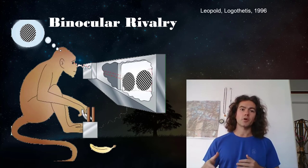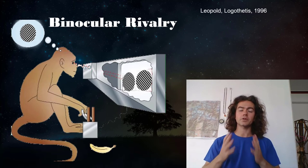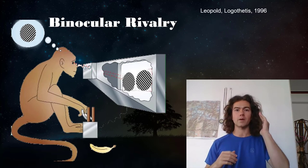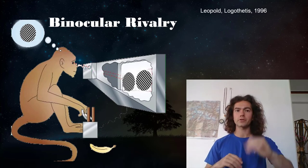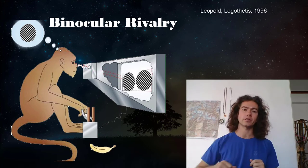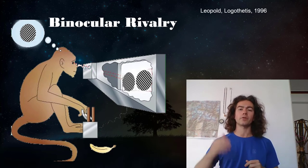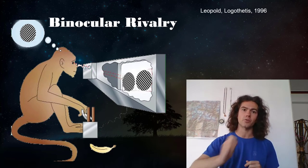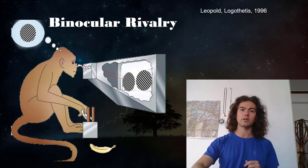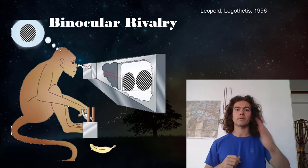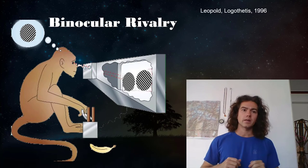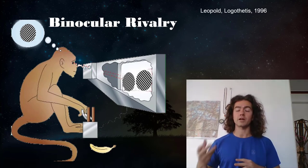So the monkeys in this experiment were trained with two levers. And initially, they're being presented all the time, 100%, in both eyes, with just a grating going in this direction or just a grating going in this direction. And the monkeys are trained that whenever the grating is going in this direction, they use the right-hand lever, and that's going to be the lever that they use to indicate that they're seeing a grating going this way. And then they switch and they use the left-hand lever whenever they see a grating going this way. And in that way, Leopold and Logothetis are able to train the monkey to report his conscious perception.